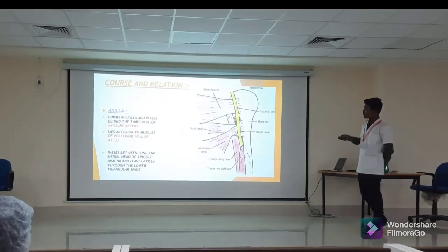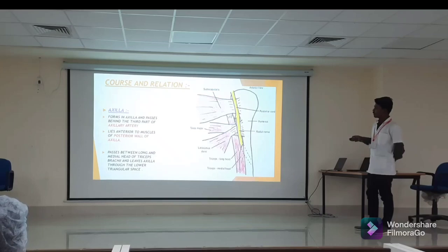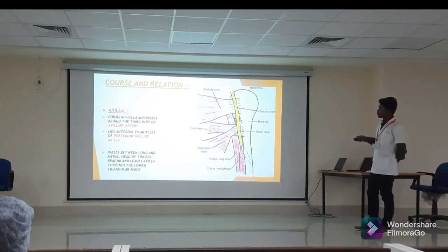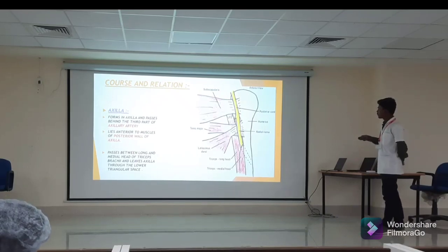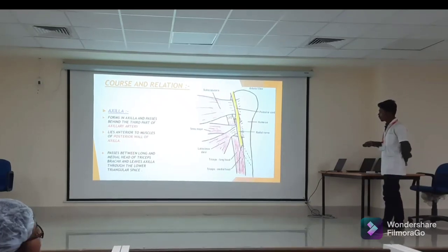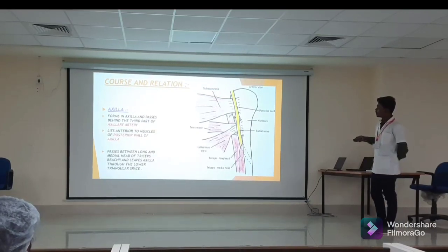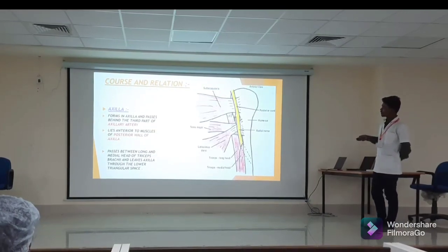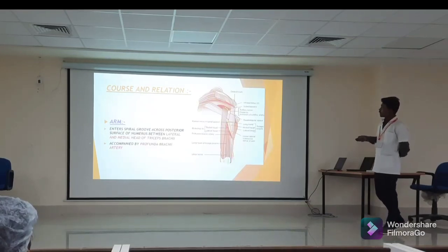In the axilla, the radial nerve passes behind the third part of the axillary artery and lies anterior to the muscles of the posterior wall, bounded by subscapularis, teres major, and latissimus dorsi. It then descends downward, passing between the long and medial heads of triceps, and leaves the axilla through the lower triangular space.